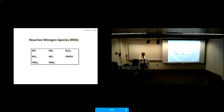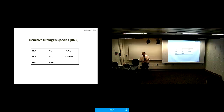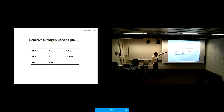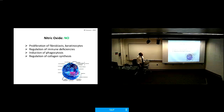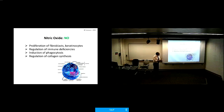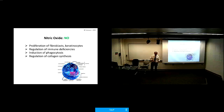The other reactive species are RNS — reactive nitrogen species. One extremely important molecule is NO, nitric oxide. It plays a role in cell proliferation, regulation, and synthesis. It's a very important molecule in biology.